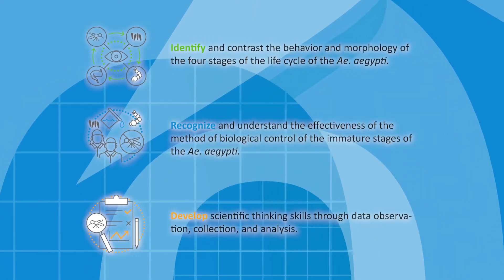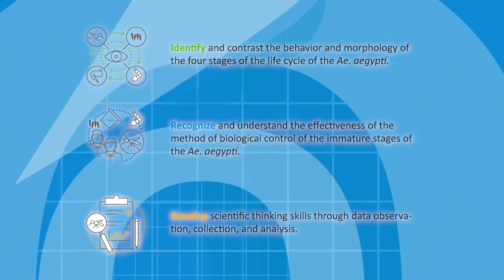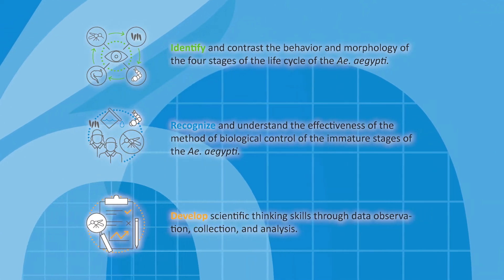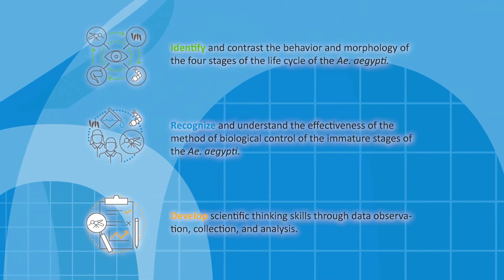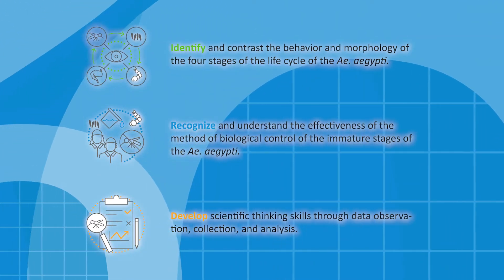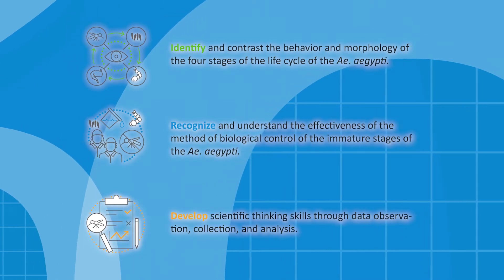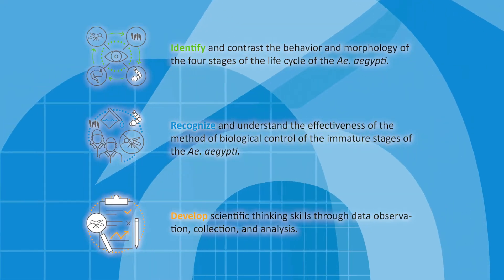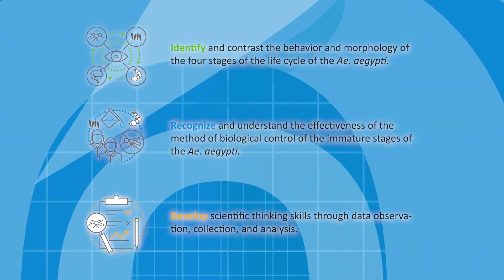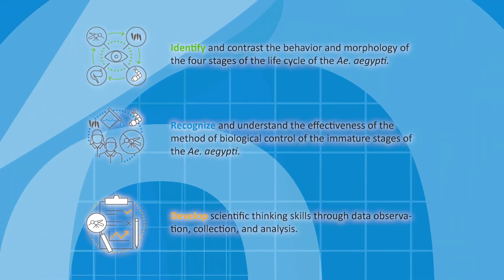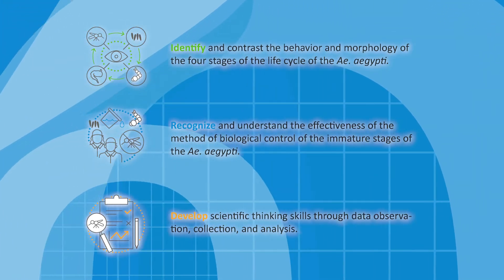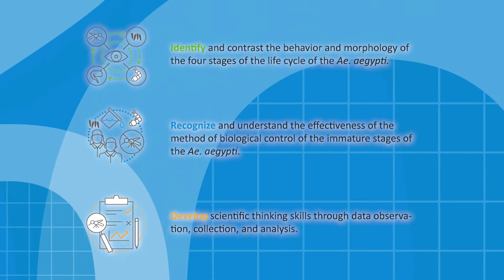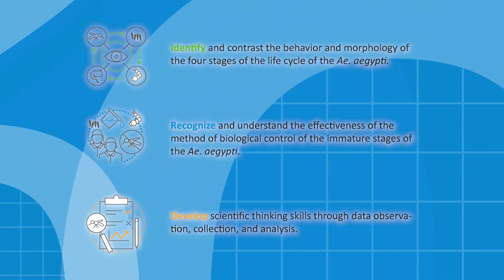The goals of the research are: identify and contrast the behavior and morphology of the four stages of the life cycle of the Aedes aegypti; recognize and understand the effectiveness of the method of biological control of the immature stages of the Aedes aegypti; and develop scientific thinking skills through data observation, collection, and analysis.